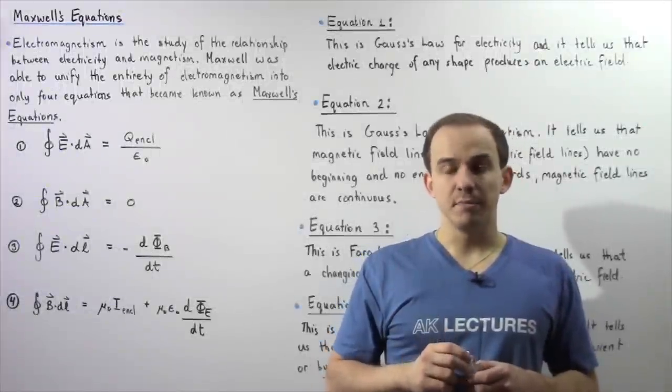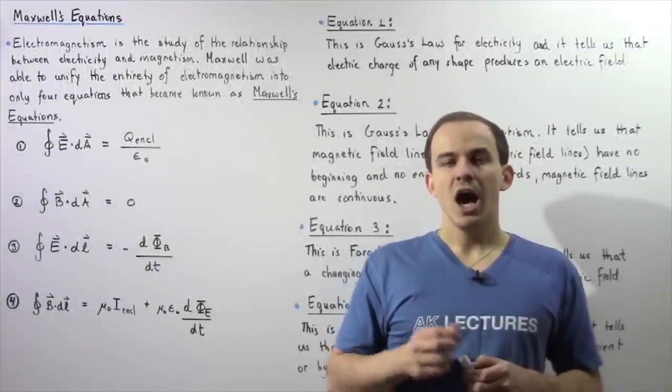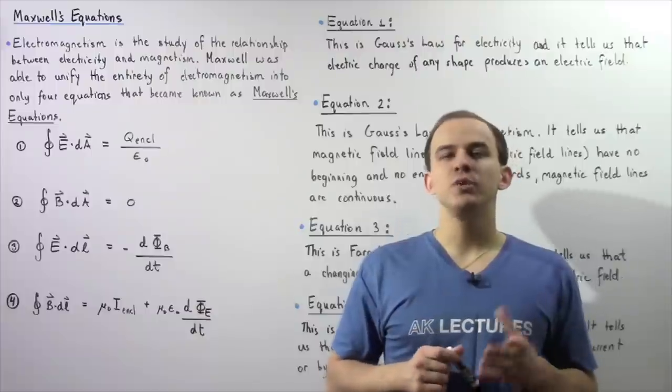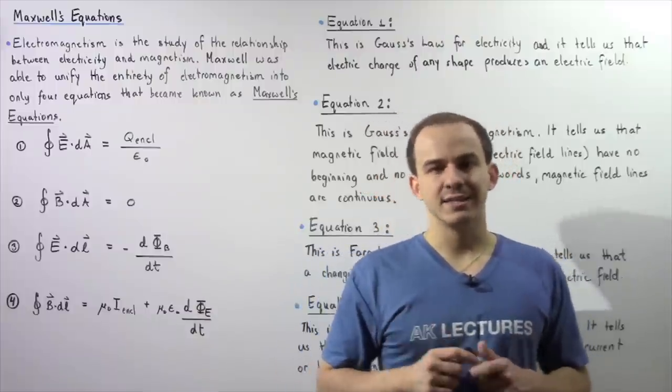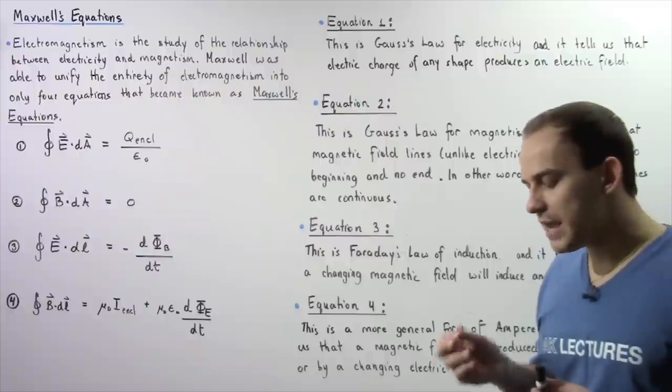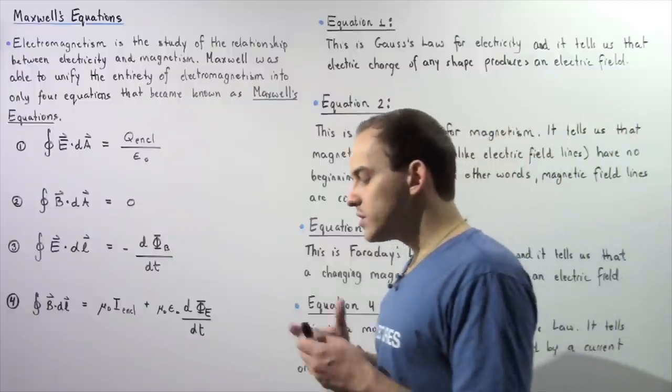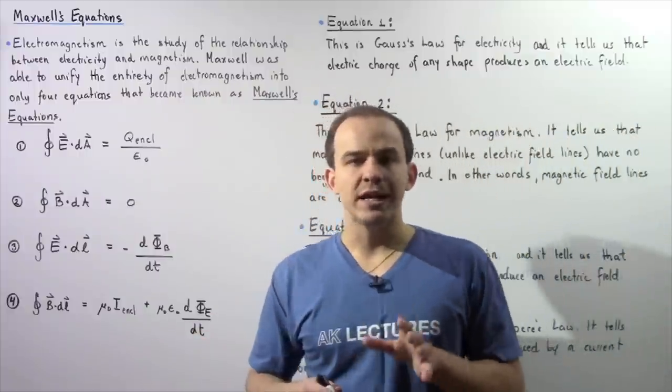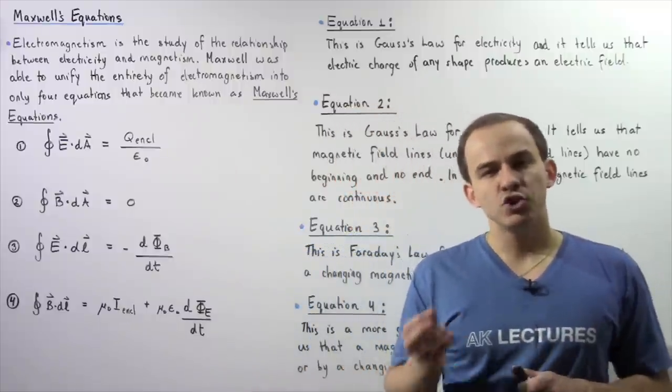Recall that electromagnetism is essentially the study of the relationship between electricity and magnetism. A Scottish physicist by the name of James Clerk Maxwell was able to unify the field of electromagnetism into